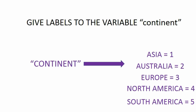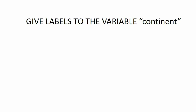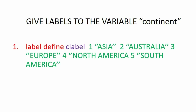In order to fully understand this, we're going to give you a second example using the variable continent. Here are the values in that variable and the labels we're going to assign to them. The first line of code is 'label define', then the name of the label — 'clabel' for continent label. Stata doesn't know what variable it's going on yet; all it knows is it'll be called clabel, and that any variable this label gets assigned to will read Asia for value one, Australia for value two, and so on.